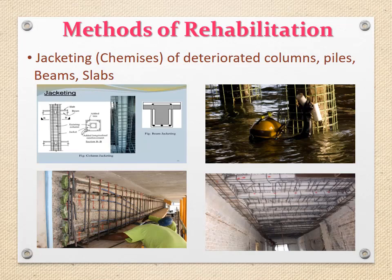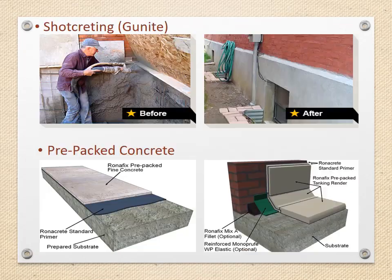Now let's discuss the methods of rehabilitation. The first method is jacketing — jacketing is done for deteriorated columns, piles, beams, slabs, etc. Another method is shotcreating or gunniting — a concrete mix of very high workability is fired with compressed air. It is most suitable where water should not penetrate, such as in water tanks.